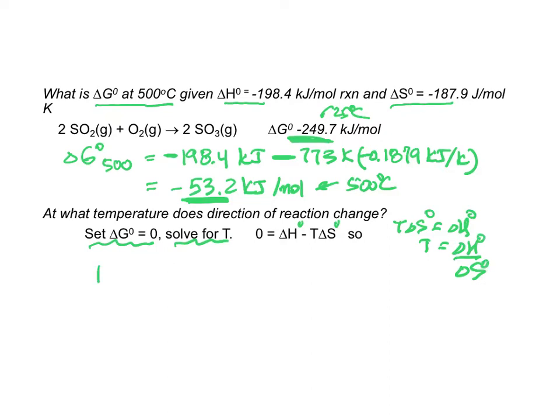So I would just say my temperature where it will change will be my delta H, minus 198.4 kilojoules. I will divide that by my delta S in terms of kilojoules, 0.1879 kilojoules per kelvin and I come up with 1056 kelvin.